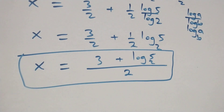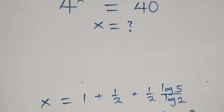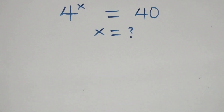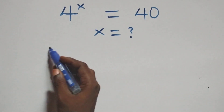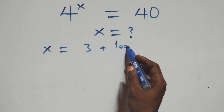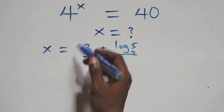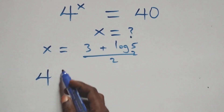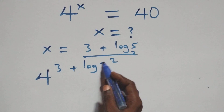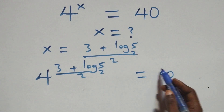Let's check that this satisfies the given problem. We substitute the value of x equals to three plus log five to base two, all over two, back into the original equation. What we have becomes four raised to the power of three plus log five to base two, all over two, equals forty.